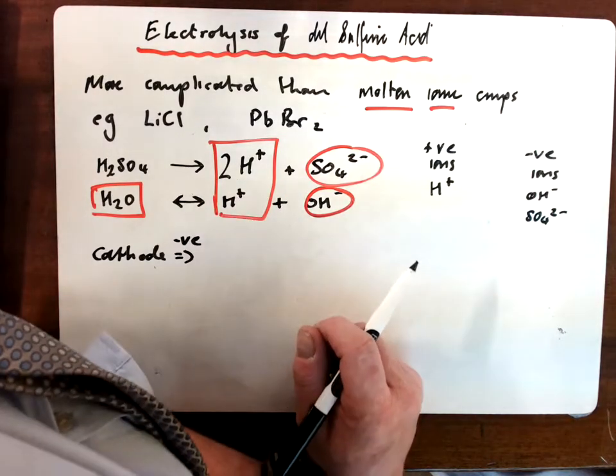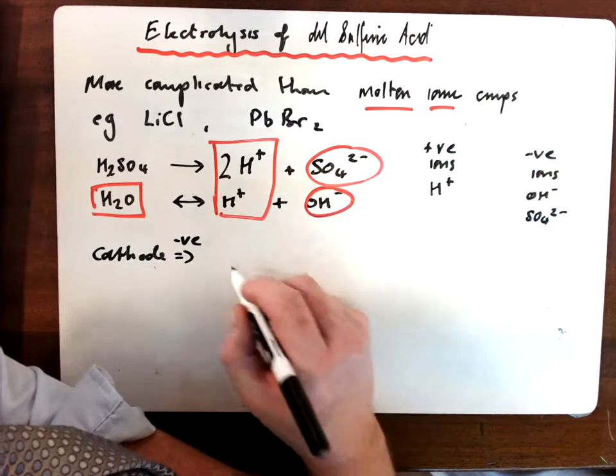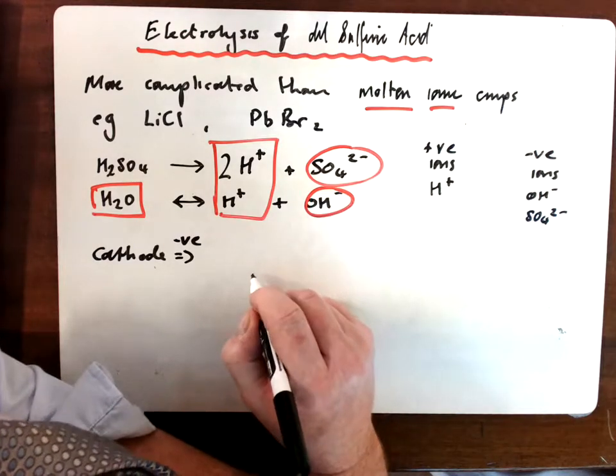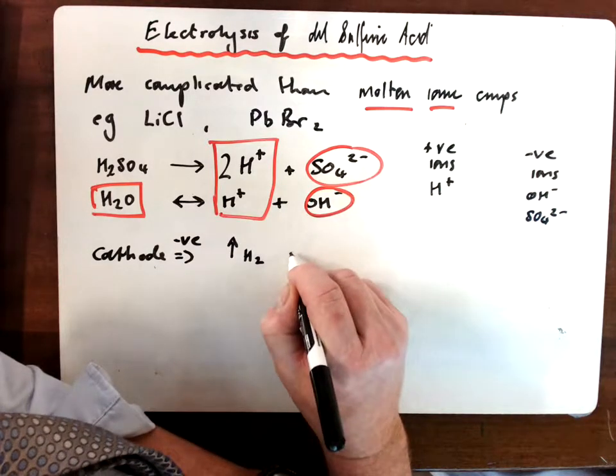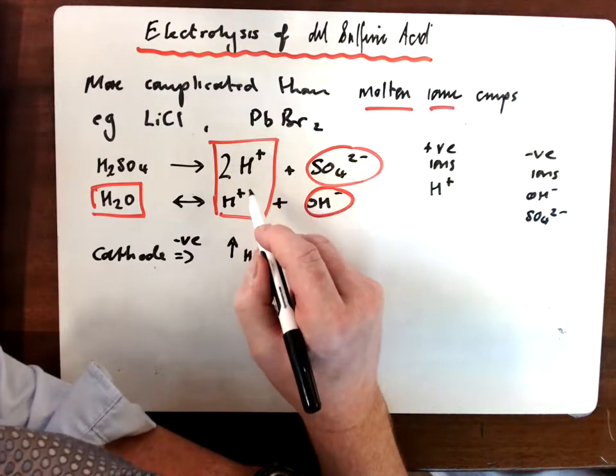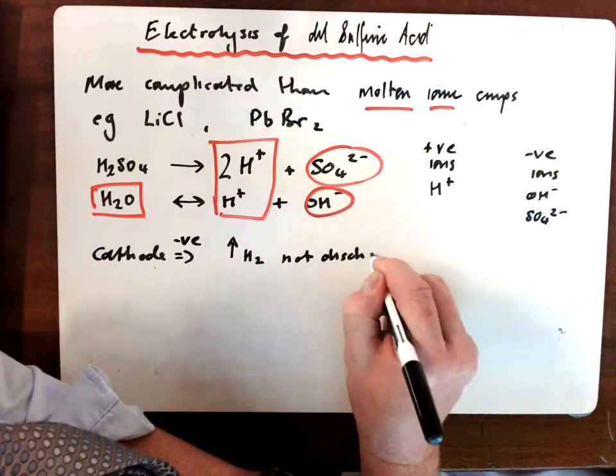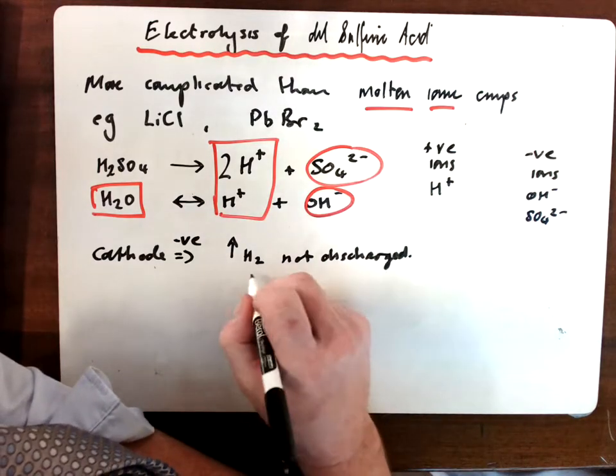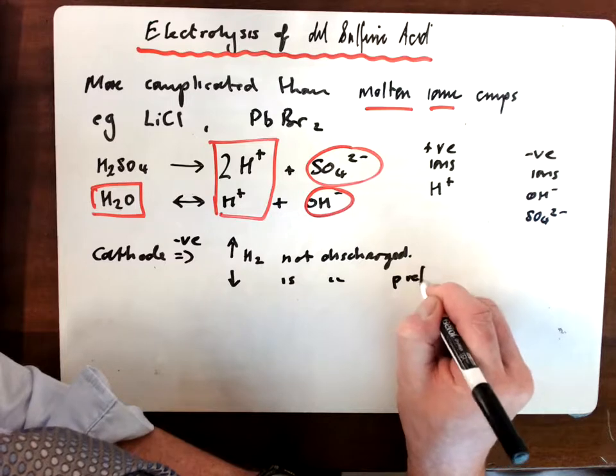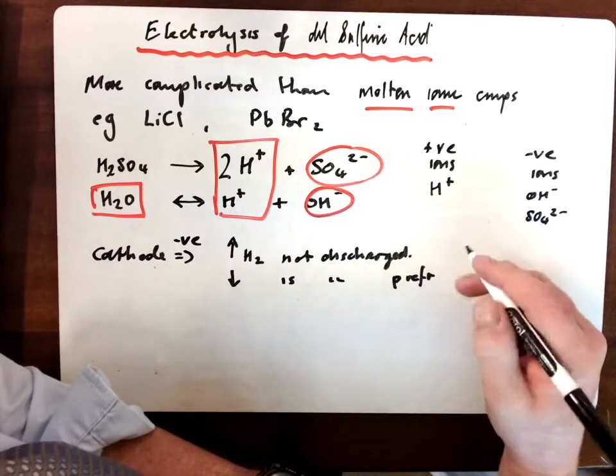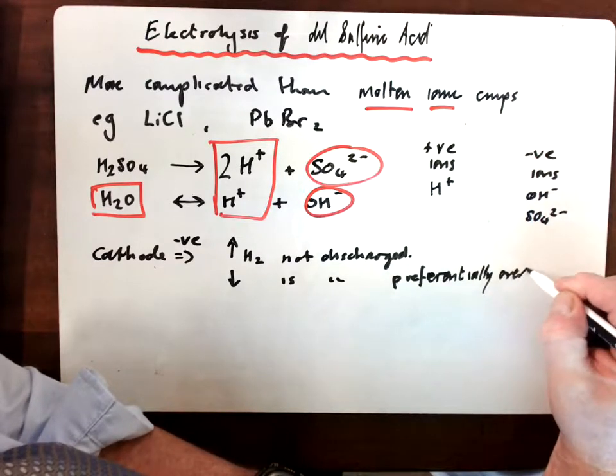Now if there were other positive ions, we would need to be a little bit careful as to what was discharged. And the rule, very simply, is that if you use your reactivity series, which you have to know, anything above hydrogen in the reactivity series, for example if I had a potassium ion or a magnesium ion in there, anything above it is not discharged. Anything below hydrogen is discharged preferentially over hydrogen.